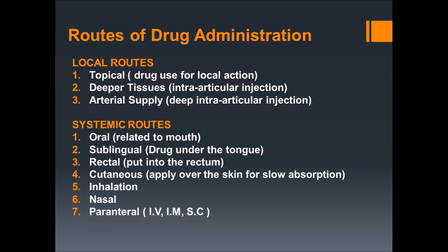Seventh is parenteral, which may be subdivided into three parts: first is intravenous, second is intramuscular, and third is subcutaneous. This route has very high bioavailability as the drug directly reaches the bloodstream, so this route is also used for fast action of a drug.